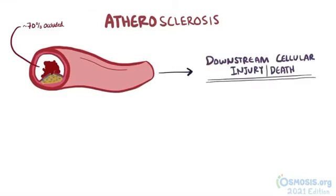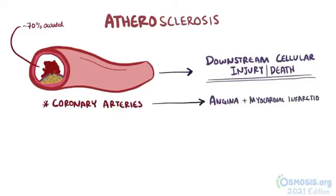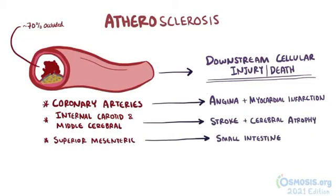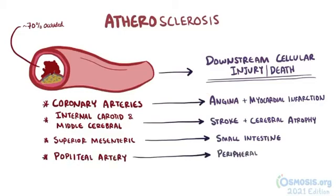If blood flow is reduced in the coronary arteries, angina and myocardial infarctions can occur. Seriously occluded internal carotid and middle cerebral arteries lead to strokes and cerebral atrophy. An occluded superior mesenteric artery affects the small intestine, and an occluded popliteal artery can cause peripheral vascular ischemia like gangrene or claudication, which is frequent leg cramping during exercise.